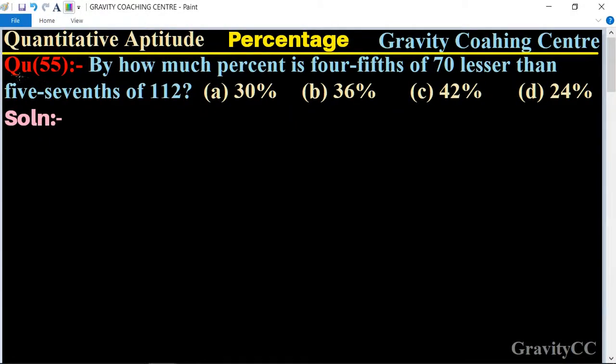Quantitative aptitude chapter percentage, question number 55: By how much percent is four-fifths of 70 lesser than five-sevenths of 112? So first we find the four-fifths.